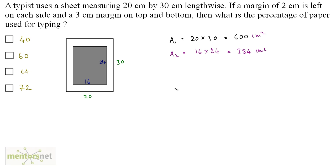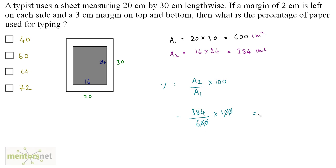Now we have the two areas. We want the percentage of the paper used for typing — that means the typing area upon the total area of the paper. So percentage equals A2 upon A1 times 100. So 384 over 600 times 100 — the zeros cancel out, and 384 divided by 6 is 64 percent. That's the answer — Option C.